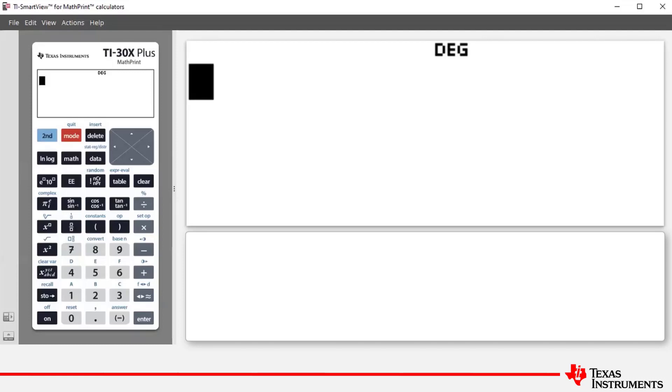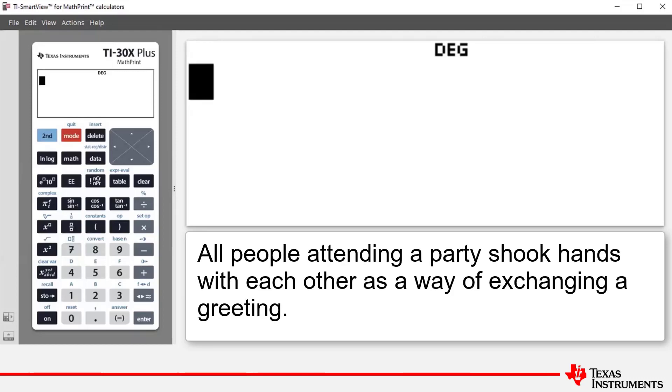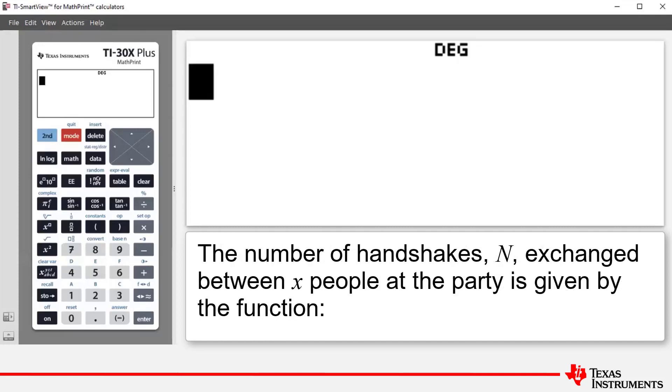First let's look at the example. The example says all people attending a party shook hands with each other as a way of exchanging a greeting. The number of handshakes N exchanged between x people at the party is given by the function N(x) which equals x/2 times (x-1), where x is obviously a positive integer.